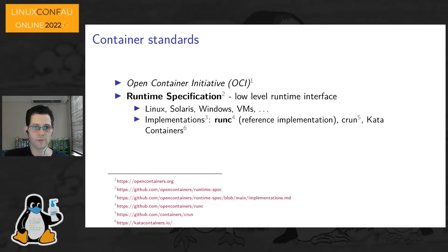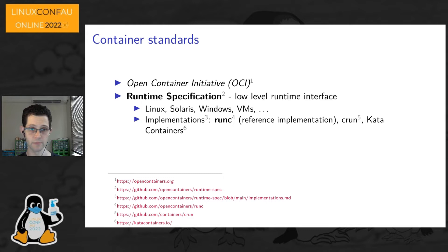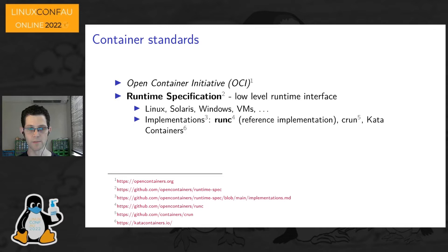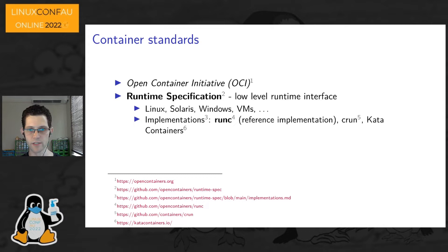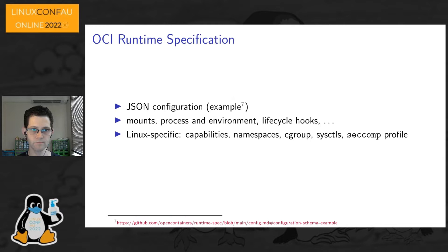The Open Container Initiative, an initiative of the Linux Foundation, has been specifying and developing specifications for various aspects of the container ecosystem. The one we're talking about today is the runtime specification. It is not Linux-specific — it encompasses Solaris containers, Windows containers, and even virtual machines treating VMs as a kind of container within the OCI abstraction. OCI implementations include runc, which is the reference implementation for Linux; crun, another Linux implementation; and Kata Containers, an implementation for VM-based container instantiation.